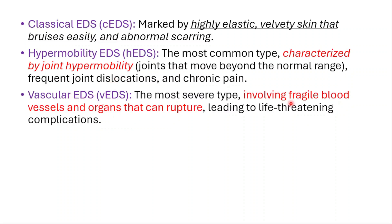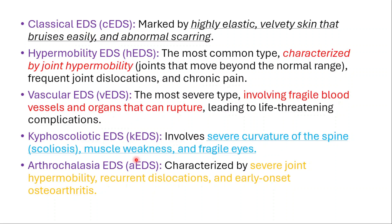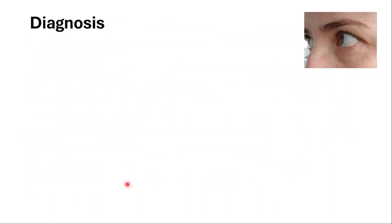Vascular type, the most severe type, involving fragile blood vessels and organs that can rupture, leading to life-threatening complications. Kyphoscoliotic EDS involves severe curvature of the spine, scoliosis, muscle weakness, and fragile eyes. Arthrochalasia EDS is characterized by severe joint hypermobility, recurrent dislocations, and early onset osteoarthritis.